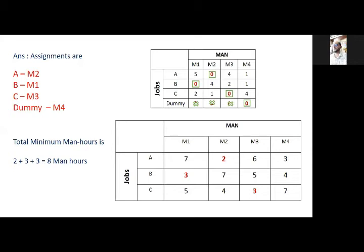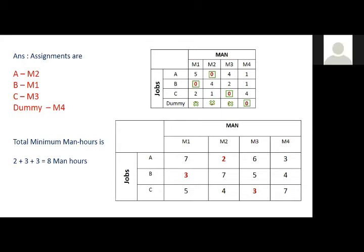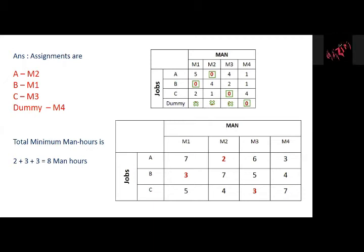A student asks: if jobs are more and persons are fewer, do we add a dummy person? Yes — wherever you find a shortage, you add a dummy. For example, if there are five jobs and three men, add two dummy men. The dummy is always filled with zeros because it represents no actual job, so there is no cost associated with it.